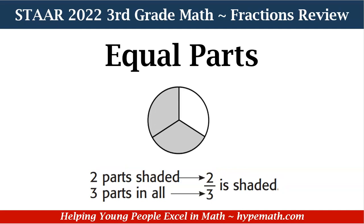Here is another example of equal parts. We have a circle that is divided into 3 equal parts. Since we have three equal parts total, that is our denominator. We're looking for the parts that are shaded, and you can see that there are 2 parts shaded. So 2 will be our numerator, and our fraction is 2/3.